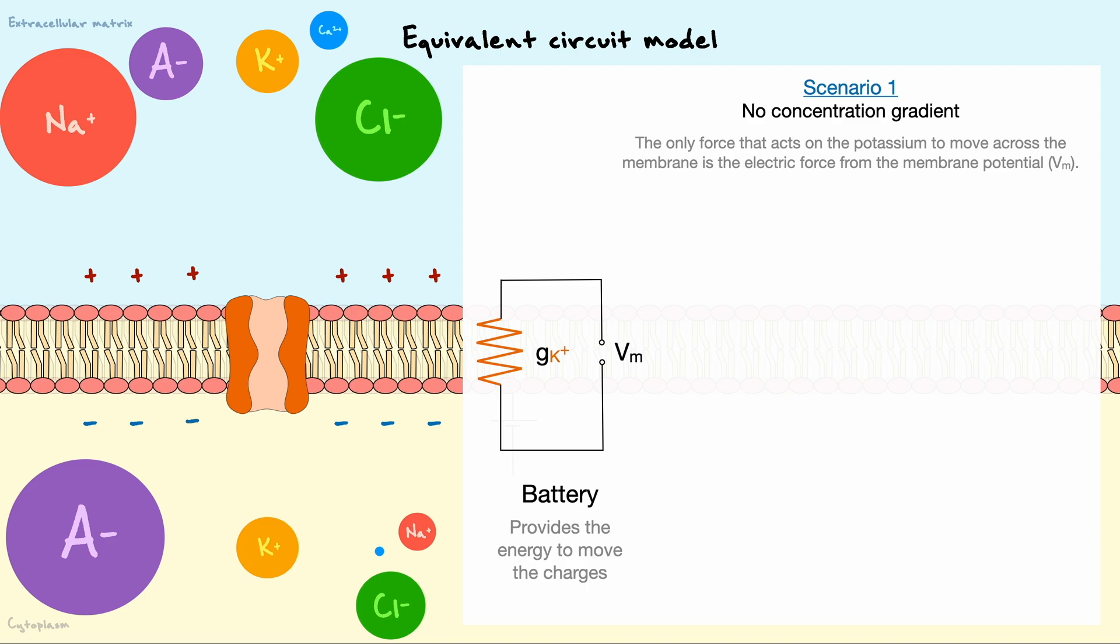As such, the force, or in terms of electrical circuit, the battery, is the resting membrane potential, Vm. From Ohm's law, the current across a conductor is equal to the product of the conductance and the voltage. Hence, in the first scenario, the current across the potassium channel is equal to the conductance of the channel multiplied by the resting membrane potential.